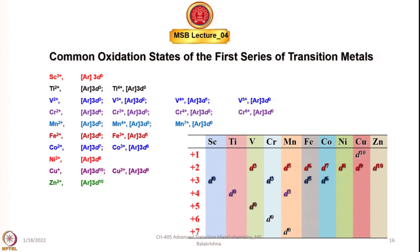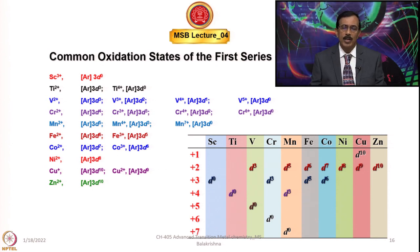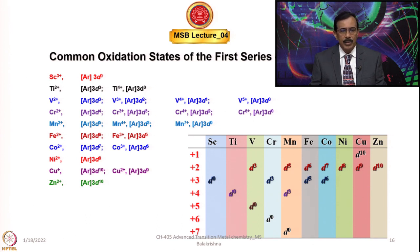Let us look into the common oxidation states of the first series of transition elements. The scandium group has a common oxidation state of plus 3. Titanium has D2S2 configuration, so the group oxidation state is plus 4, and plus 3 and plus 2 also occur but are less stable. Vanadium shows plus 2, plus 3, and plus 5 oxidation states. Manganese shows all possible oxidation states up to plus 7. Iron shows plus 2 and plus 3 as the most common. Cobalt also shows plus 2 and plus 3. Nickel shows plus 2 and in some cases plus 4. Copper shows plus 1 and plus 2, and zinc shows plus 2.